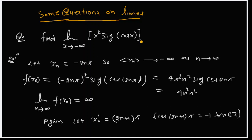We will discuss two or three definitions. We will discuss the limit using one definition. What is the limit of x tending to minus infinity of x squared times cos(x)? Here we have a bracket. For this, let's take a sequence from the domain. We can solve different types using this approach.